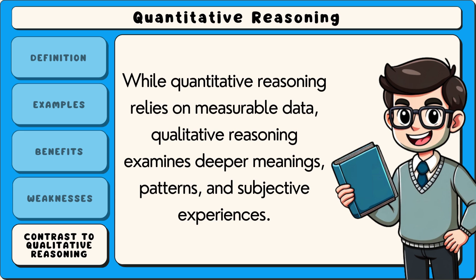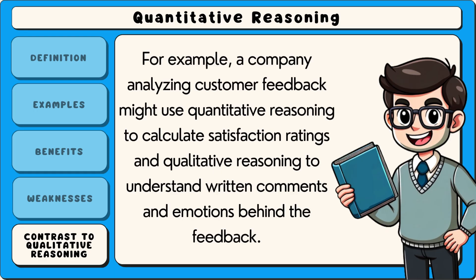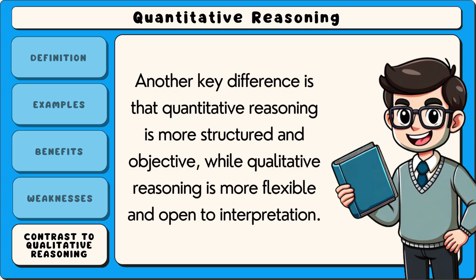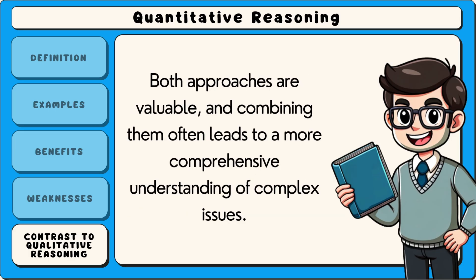While quantitative reasoning relies on measurable data, qualitative reasoning examines deeper meanings, patterns and subjective experiences. For example, a company analysing customer feedback might use quantitative reasoning to calculate satisfaction ratings, and qualitative reasoning to understand written comments and emotions behind the feedback. Another key difference is that quantitative reasoning is more structured and objective, while qualitative reasoning is more flexible and open to interpretation. Both approaches are valuable, and combining them often leads to a more comprehensive understanding of complex issues.